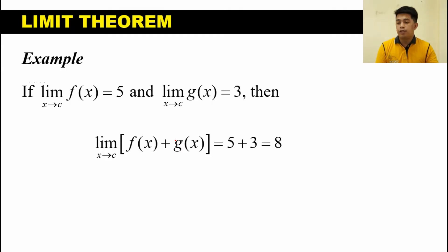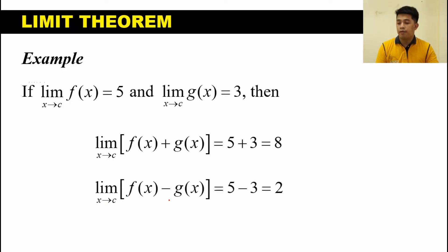Another example: if we are asked to solve for the difference of the limits, we have the limit of f of X minus g of X as X approaches C. Since we already have the values 5 and 3, we just subtract them. We have 5 minus 3 equals 2. Therefore, the limit of f of X minus g of X as X approaches C is equal to 2.